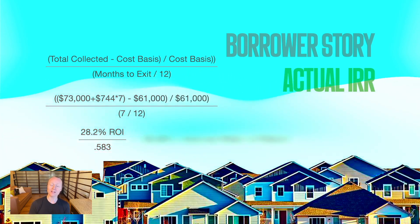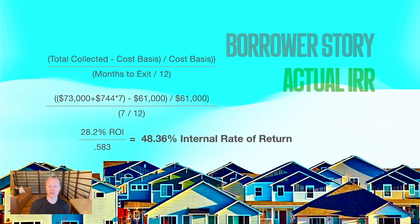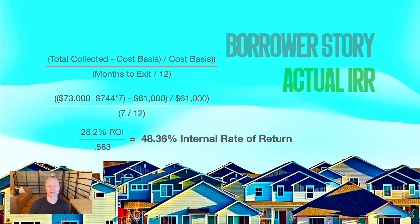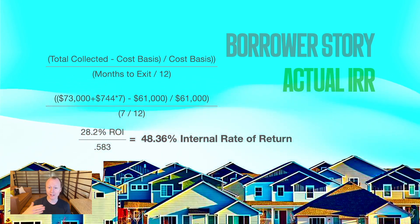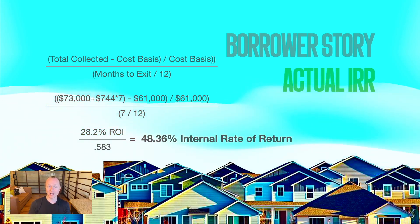That gives us an internal rate of return of 48.36%. It's great to do a deal faster because it increases the internal rate of return. And if you can put that capital back to work, you can compound it within just a year or less.